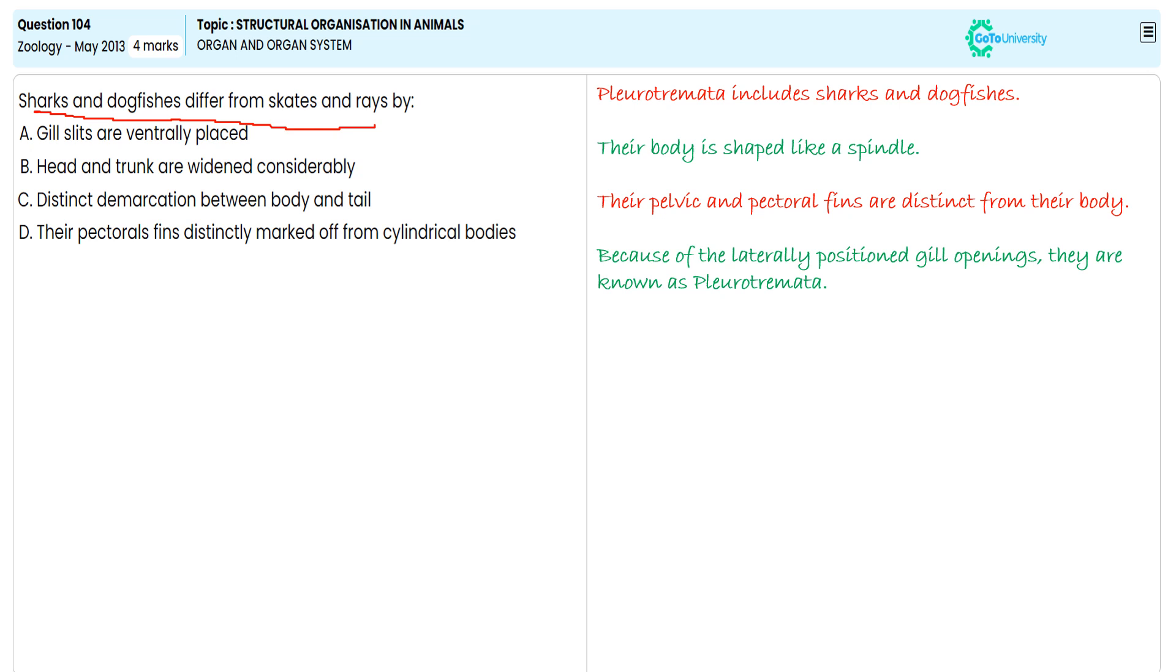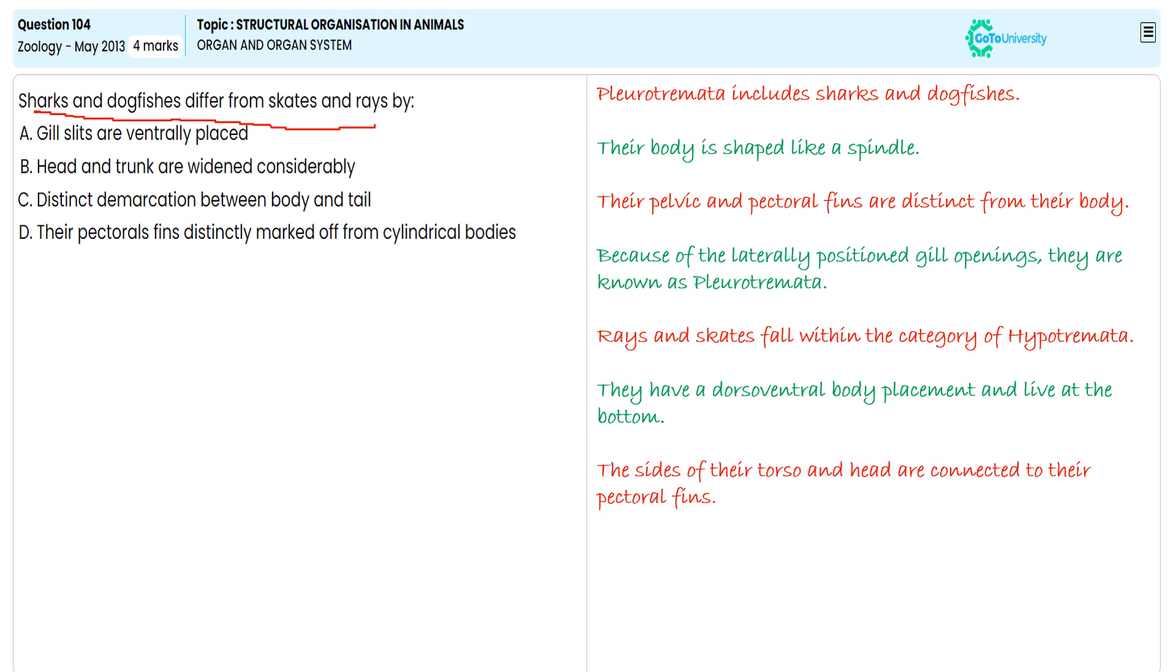Rays and skates fall under the category of Hypotremata. They have dorsoventral body placement and limbs at the bottom. The sides of their torso and head are connected to their pectoral fins. Because of the ventral location of their gill slits, they are called Hypotremata.